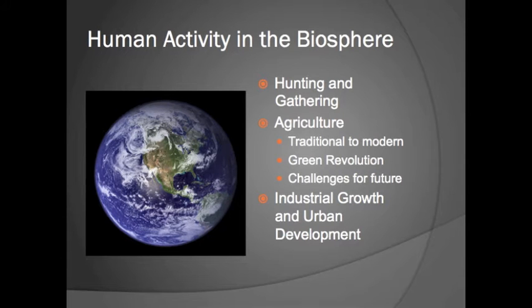There are three main types of human activity in the biosphere. We're going to talk about hunting and gathering and its effects on the biosphere. We're going to talk about agriculture and how that's changed over the years. And finally, industrial growth and urban development — how factories have grown and how that has affected urban areas and their growth.